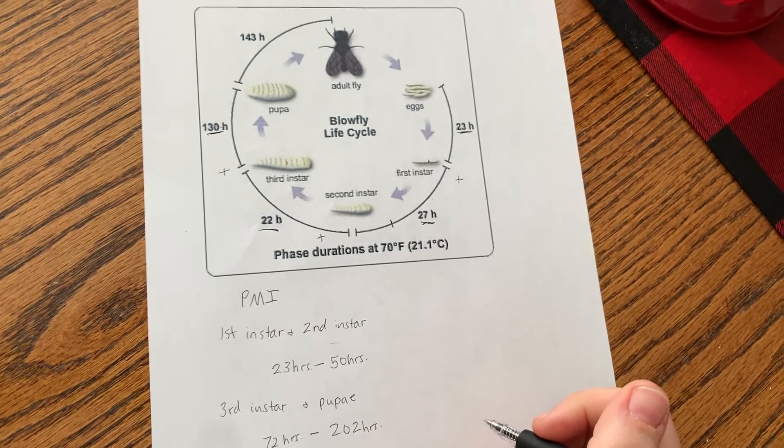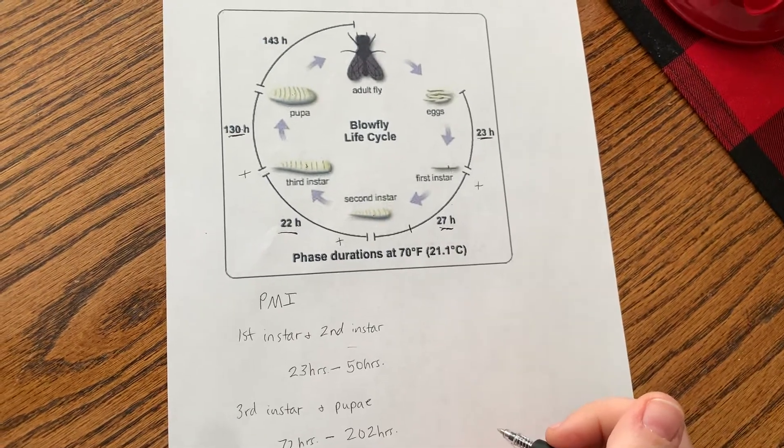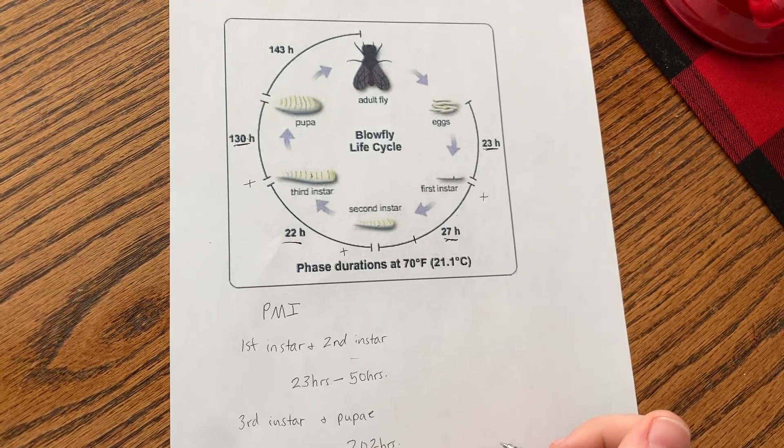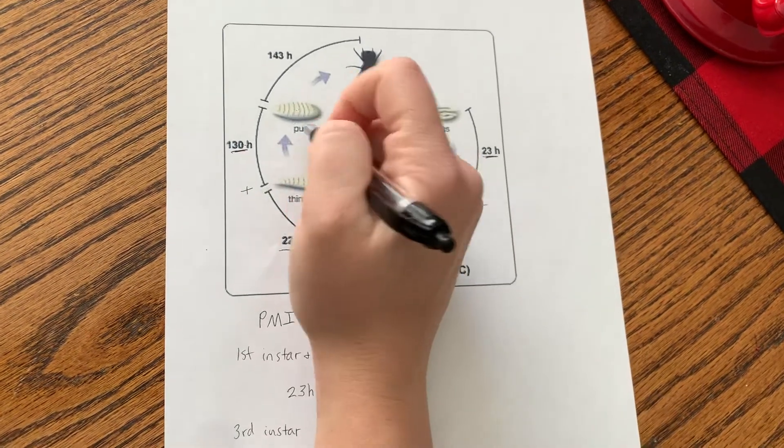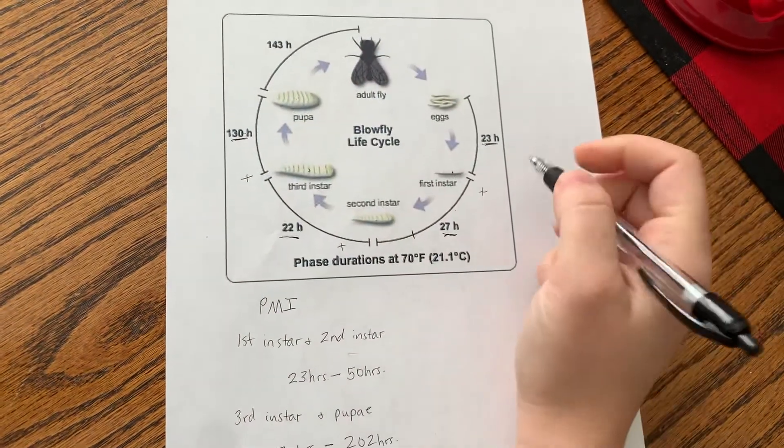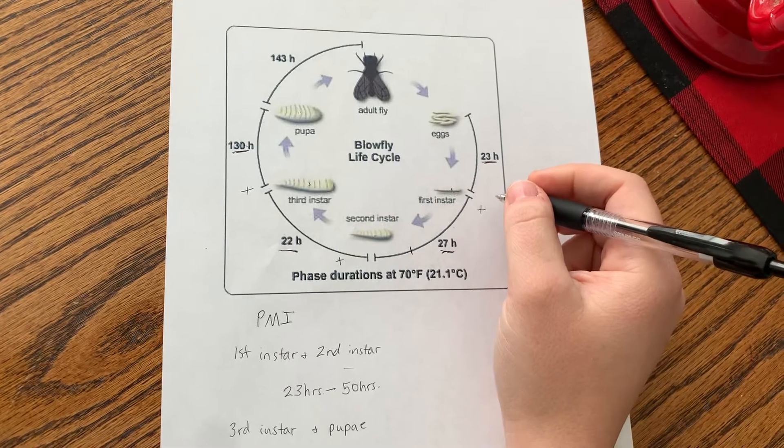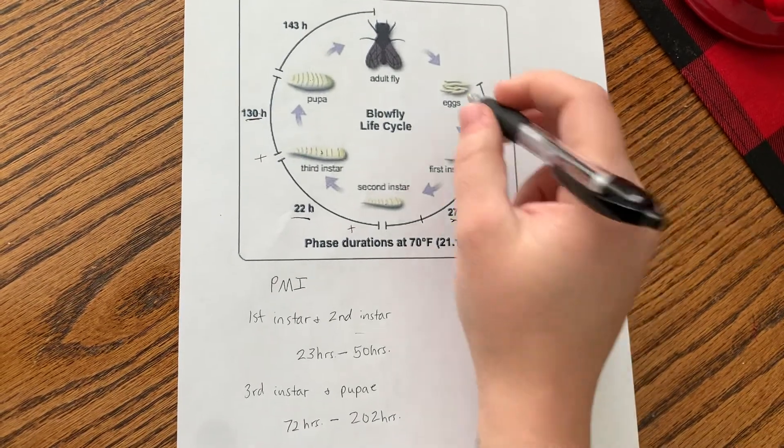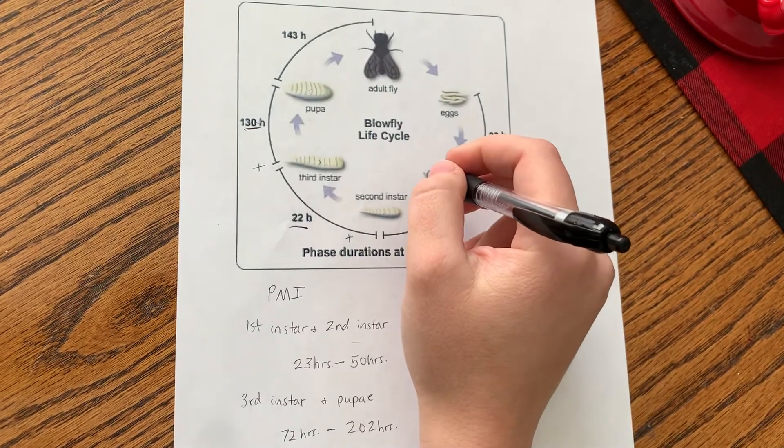Now one other consideration, of course, is that when these blowflies shed their cuticles and when they pupate, they leave these pupa casings. So investigators or entomologists are going to look for those pupa casings and that would help them to know that they've already been through this whole life cycle one time.